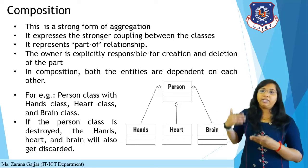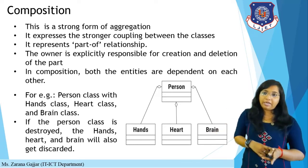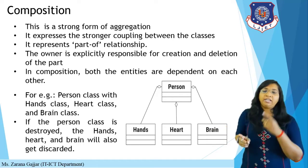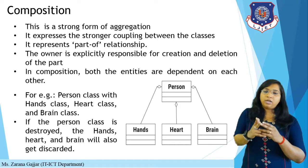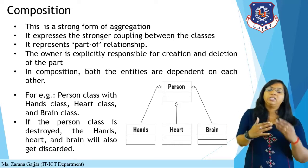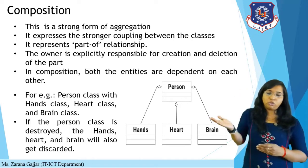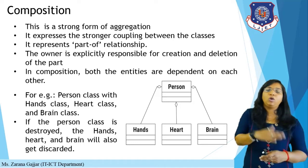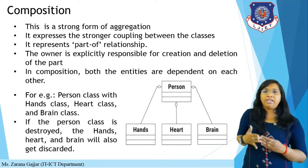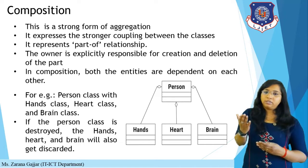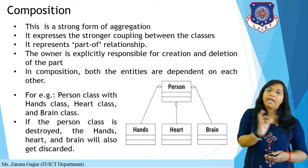In composition, both entities are dependent on each other. For example, a person class with hand, heart, and brain classes — if the person class is destroyed, the hand, heart, and brain classes will automatically be discarded. The person is the independent class while hand, heart, and brain are dependent classes. The same diamond symbol is used, placed near the main class — here the person class — followed by hand, heart, and brain classes.